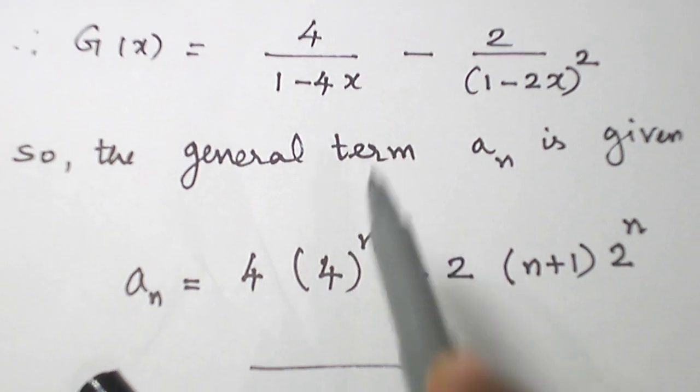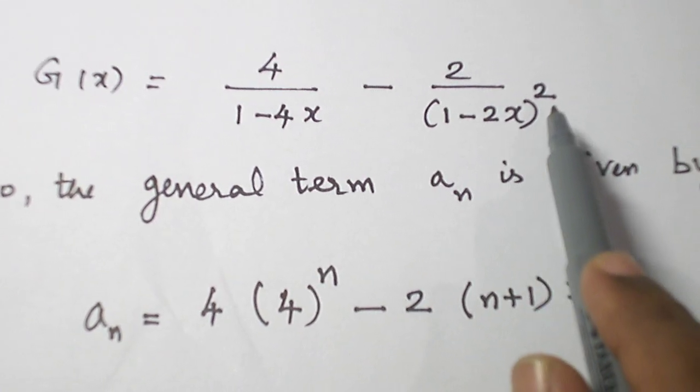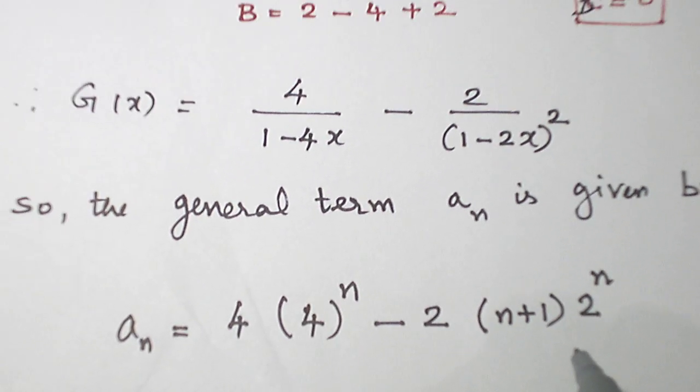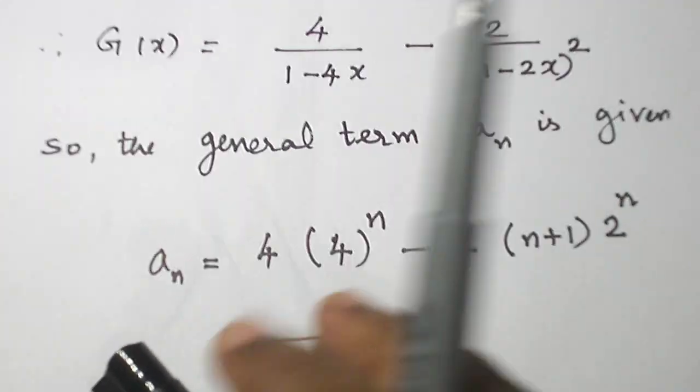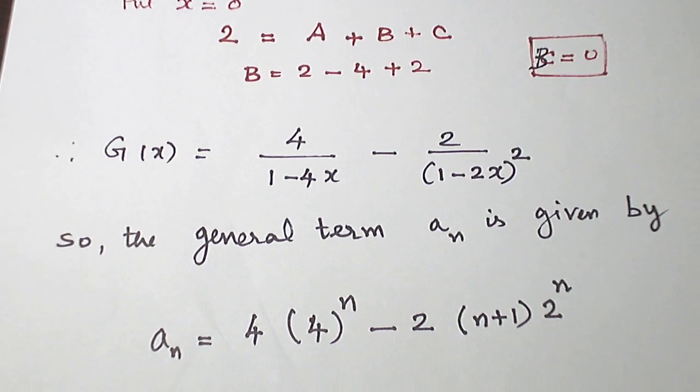So for 1/(1-ax), a^n is the sequence. For 1/(1-ax)^2, (n+1)a^n is the sequence. We get the final answer for the a_n. And let us see another problem in the next video. Thank you.